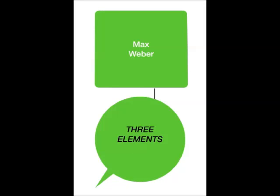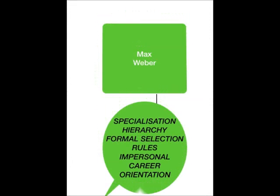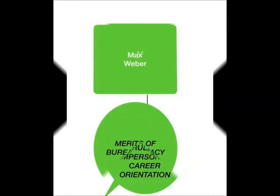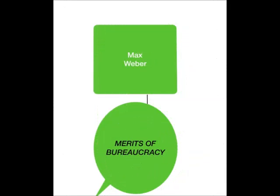Moreover, there are three elements of a bureaucratic model. All regular activities within a bureaucracy can be regarded as official duties. Management has the authority to impose rules, and rules can easily be respected based on established methods. It is considered to be the most formalized and ideal form of management for a state in classical conception.